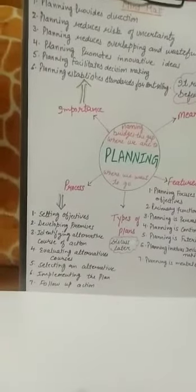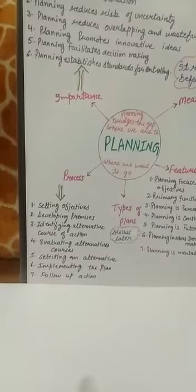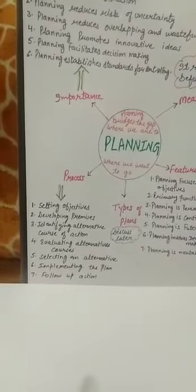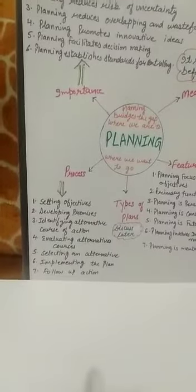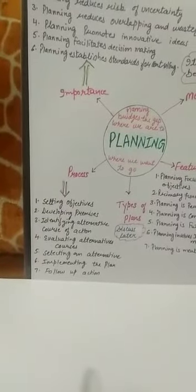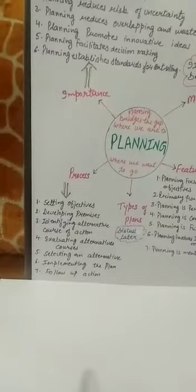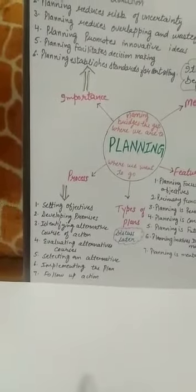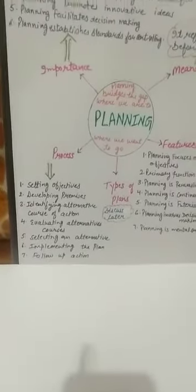The fourth step is evaluating alternative courses. Evaluating means checking the pros and cons — the positive and negative aspects of each option. After listing the various alternatives, the next important job of the manager is to evaluate each of the four options carefully, analyzing both their good and bad points.